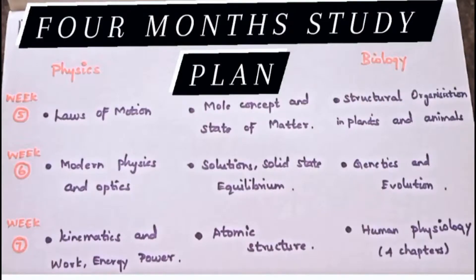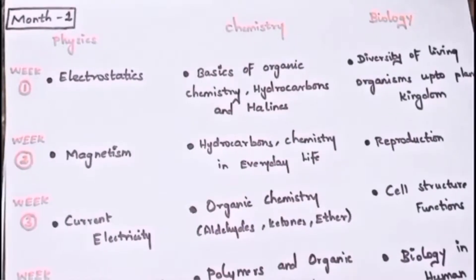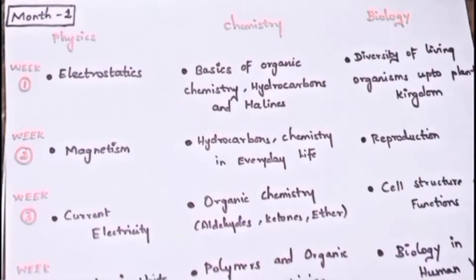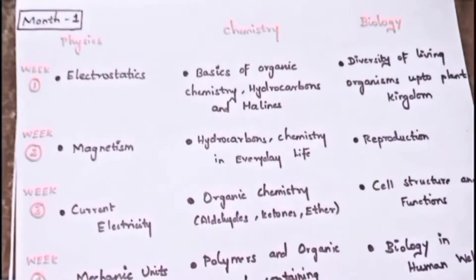Four months of study plan. In Month 1, we have to study twelve units. What are the chapters covering in those twelve units? All three subjects — Physics, Chemistry, and Biology — every four weeks of the month.